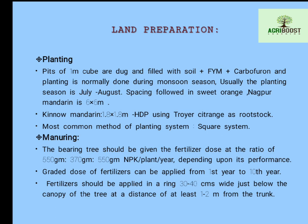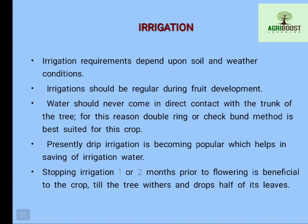For manuring, bearing trees should be given a fertilizer dose of 550 g nitrogen, 370 g phosphorus, and 550 g potassium per plant per year. A graded dose of fertilizer can be applied from the first year to the tenth year. Fertilizer should be applied in a ring 30 to 40 cm wide just below the canopy of the tree, at a distance of 1 to 2 meters from the trunk.